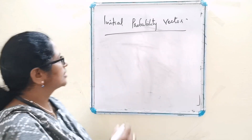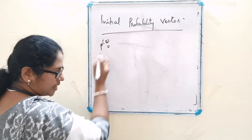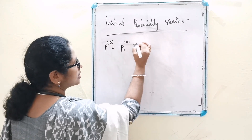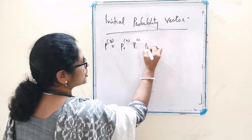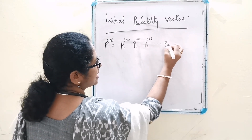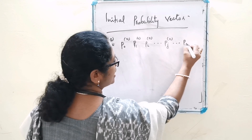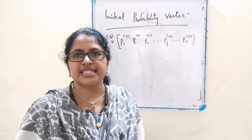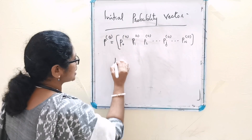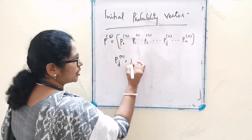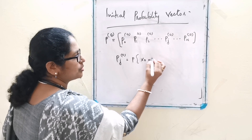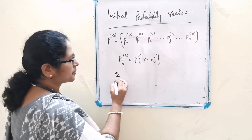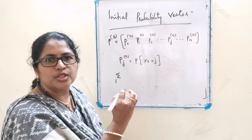The probability vector P(0) is equal to P0(0), P1(0), P2(0), ... Pj(0), ... Pn(0), and is known as the initial probability vector, where Pj(0) is equal to the probability of X(0) equal to j. Clearly, sigma over j belonging to S of Pj(0) is equal to 1.